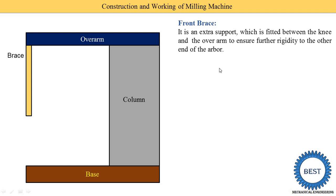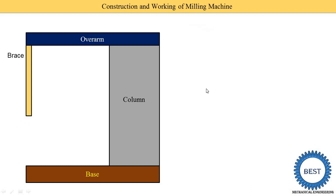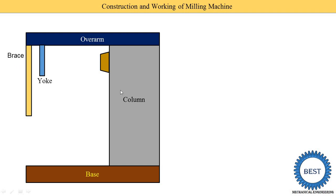The next part is the york. The york supports the other end of the arbour. In some machines only one part is provided — either a drive brace or a york. So the york is one type of extra support.